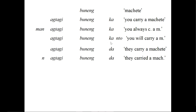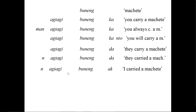Then we have ag tagi buneng ka nto, which means 'you will carry a machete.' The only difference from ag tagi buneng ka is the nto, so nto indicates future tense. We also have nag tagi buneng ak, which is 'I carried a machete,' so ak means 'I,' just like da is 'they' and ka is 'you.' And ag tagi buneng ak to means 'I will carry a machete' — so to also gives us future tense, just like nto. We can consider them the same ending for now, with the variation relating to phonology.